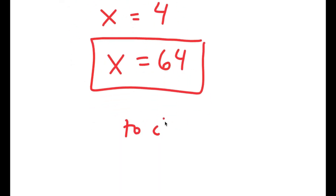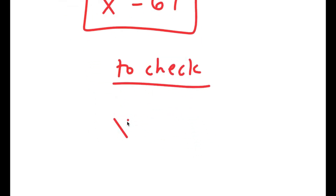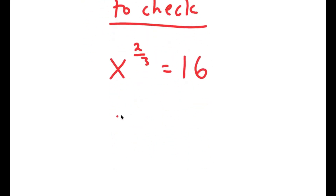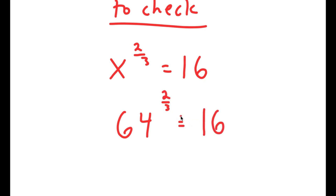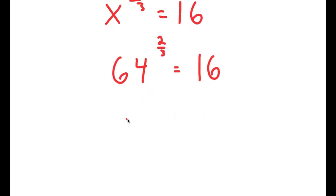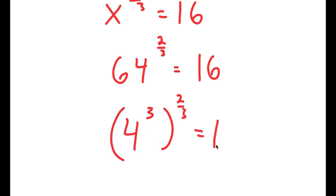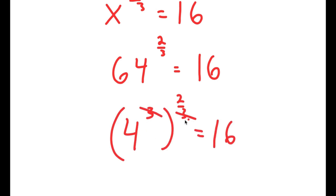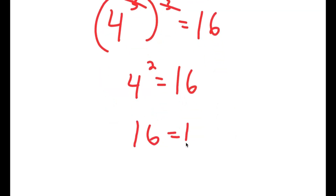Now I'm going to check to see if this is right. My original equation was x to the power of 2 over 3 is equal to 16, and x is 64. So I get 64 to the power of 2 over 3 is equal to 16. Now, 64 is the same thing as 4 to the power of 3. So I get 4 to the power of 3 to the power of 2 over 3 is equal to 16. Then these two cancel out, so I get 4 squared is equal to 16, and 4 squared is 16, so I get 16 is equal to 16.